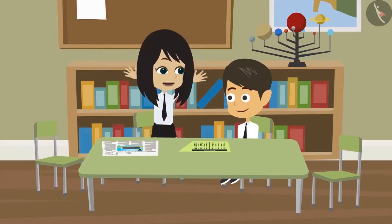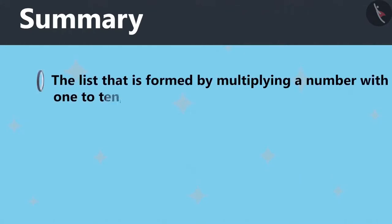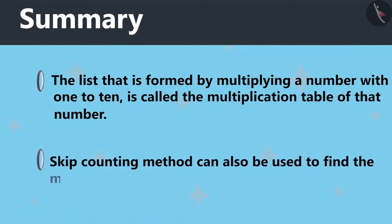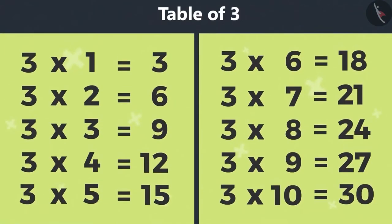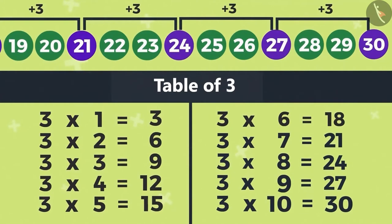This is very interesting. This way anyone can remember the multiplication of three. Today we've learned that the list that is formed by multiplying a number with one to ten is called the multiplication table of that number. And skip counting method can also be used to find the multiplication table of a number like what Vandana and Rayyanj did by writing every third number starting with three.